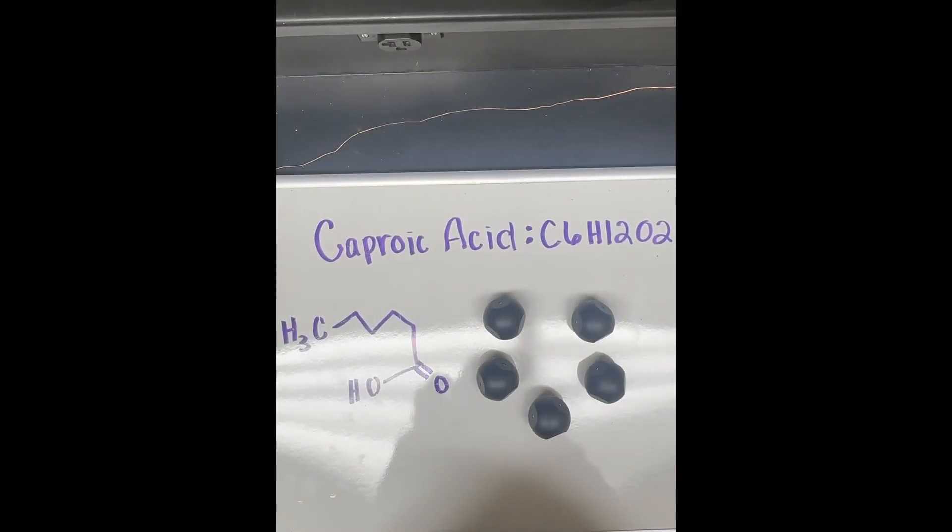To start building our molecule using the SNATOMS kit, I will first create the SP3 carbon chain, meaning that they are only bonded by a sigma bond, or a single bond. First, I will connect five carbons to each other.